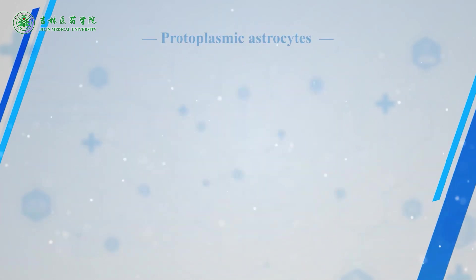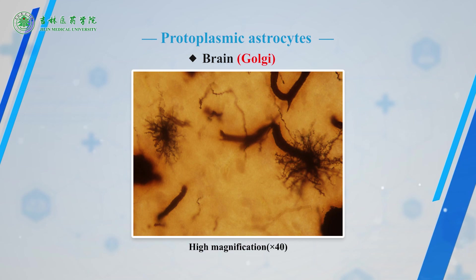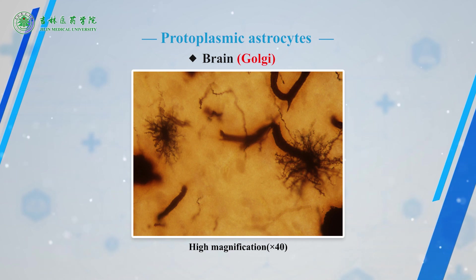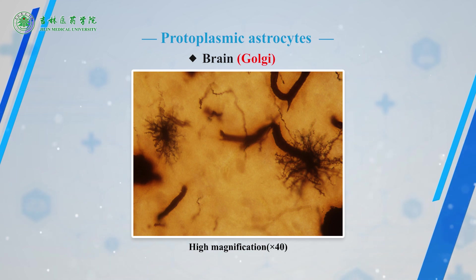The third slide is protoplasmic astrocytes, also observed with gold sublimate staining. Protoplasmic astrocytes have many rougher processes that are shorter and thicker than those of fibrous astrocytes. The cell appears as a floccular form.